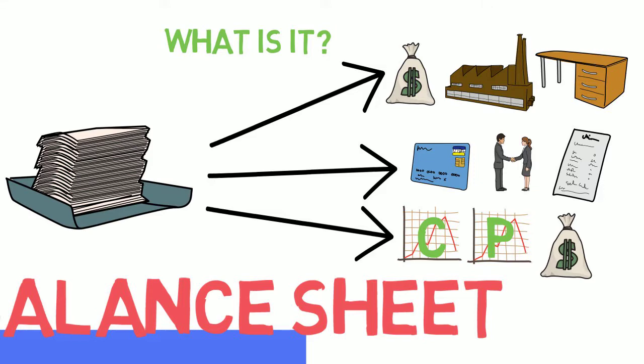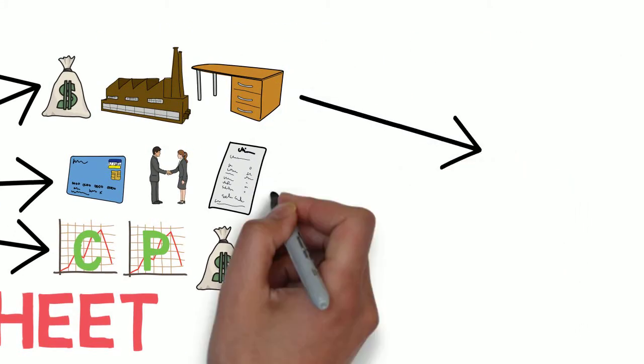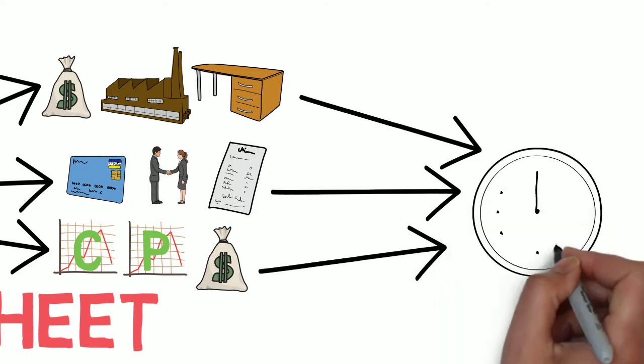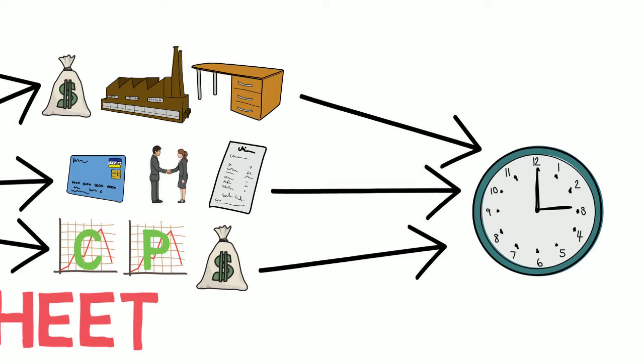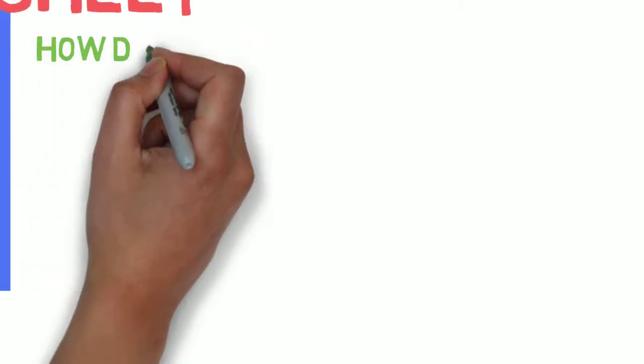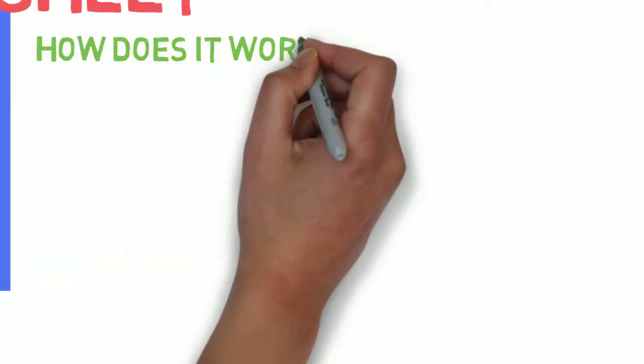So what these three parts form together is a snapshot in time of what a business looks like and what is the inflows and outflows or what does the business own and what can be held against the business at any one time.